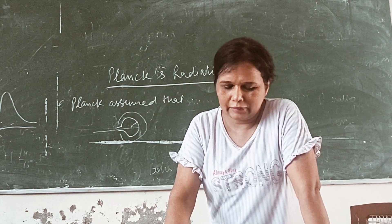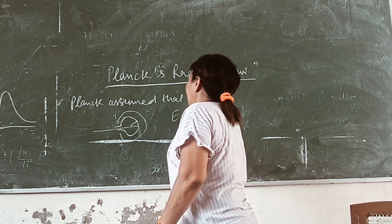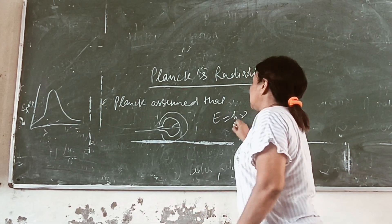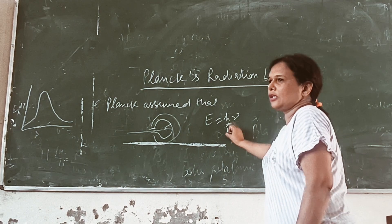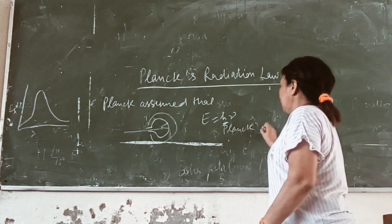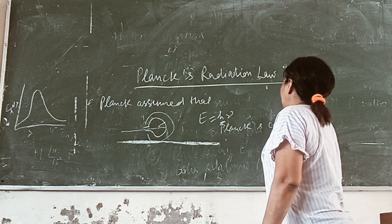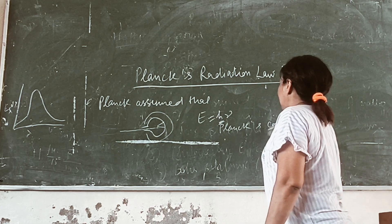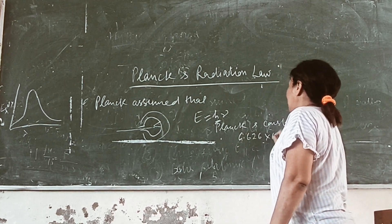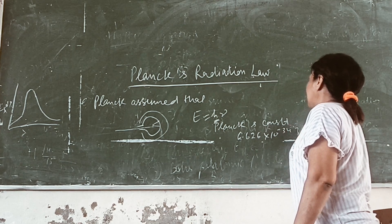The amount of energy is equal to hν, where h is Planck's constant.